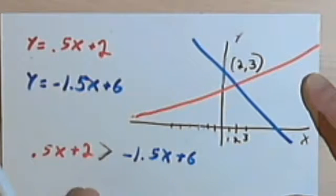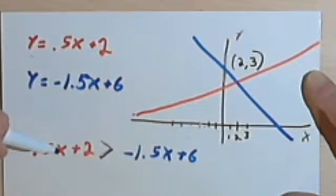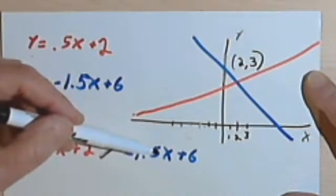But let's say we're told to do it graphically, and that's going to be very easy. So what we're looking for is all the values of x that will make this red side of the equation greater than the blue side.